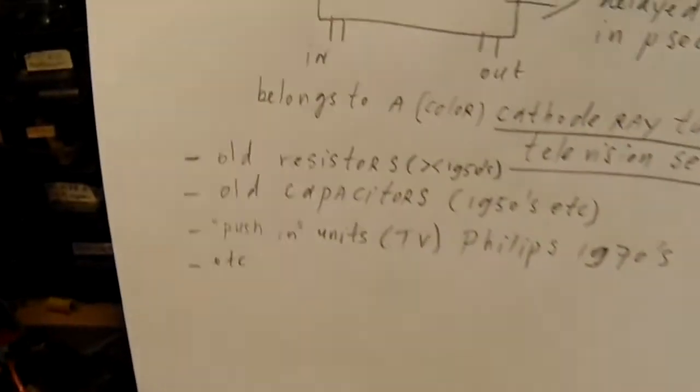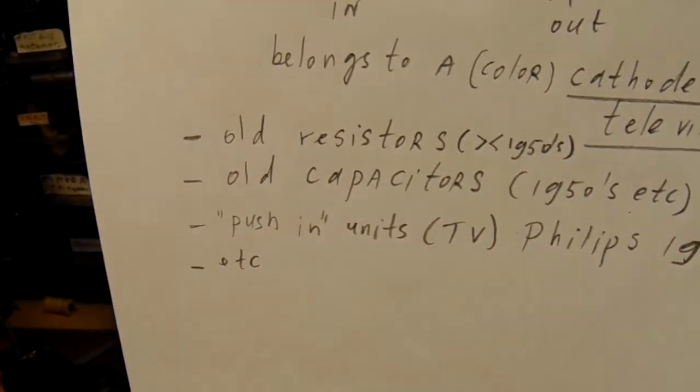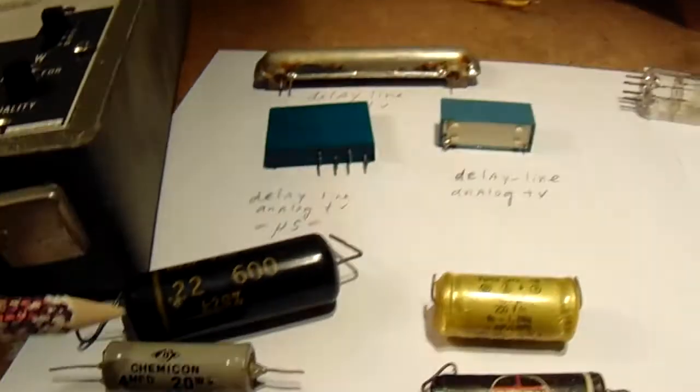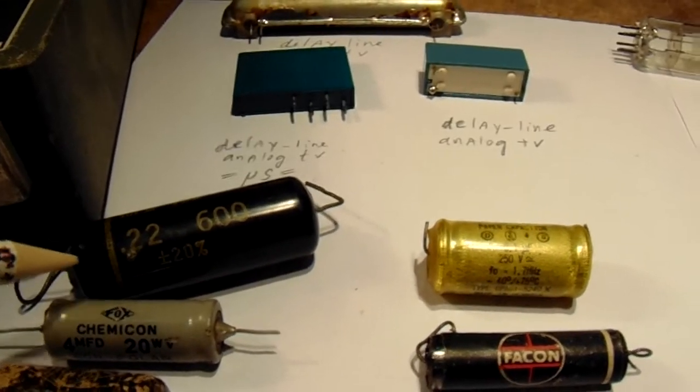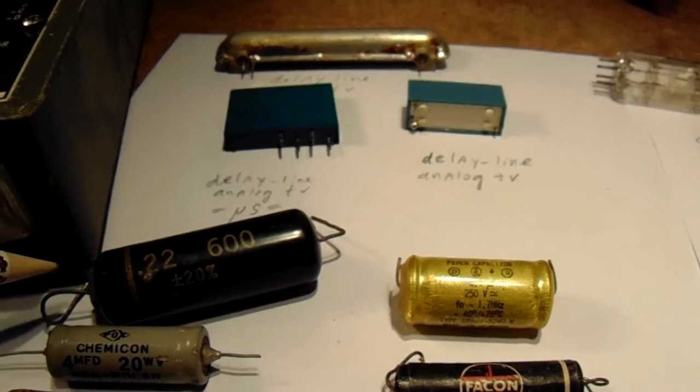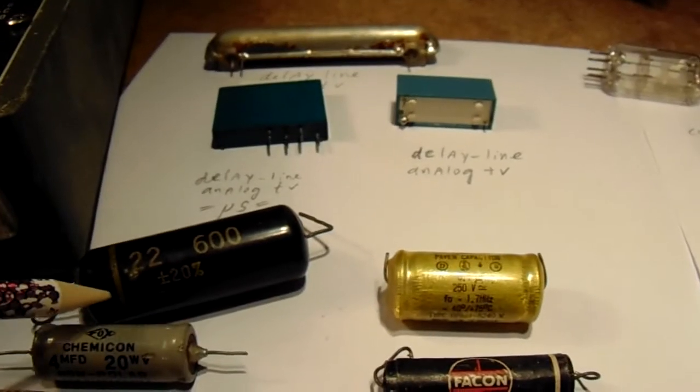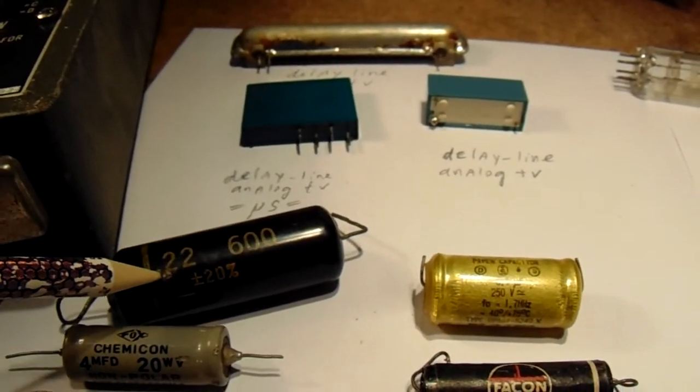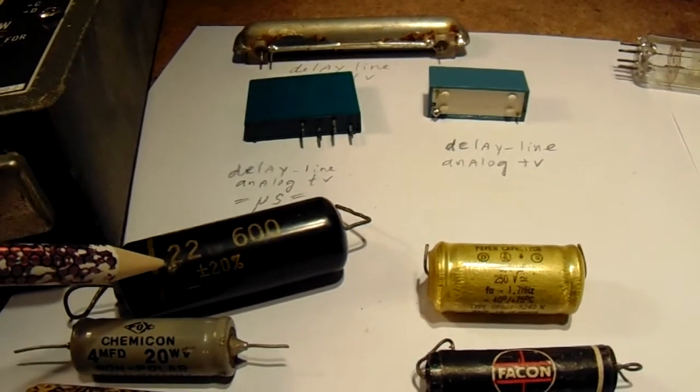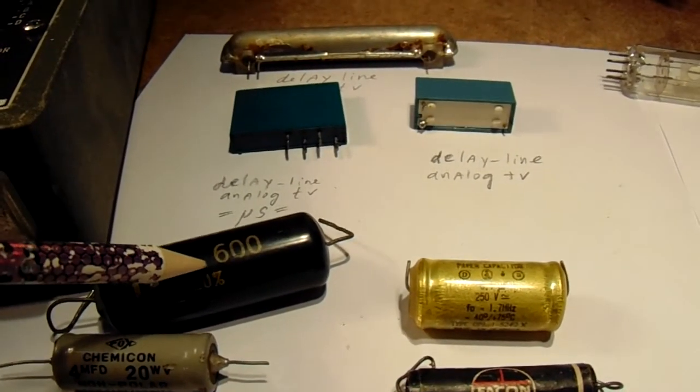And here we have old capacitors. These capacitors are very old, so completely vintage. 0.22 microfarad, 600 volts.